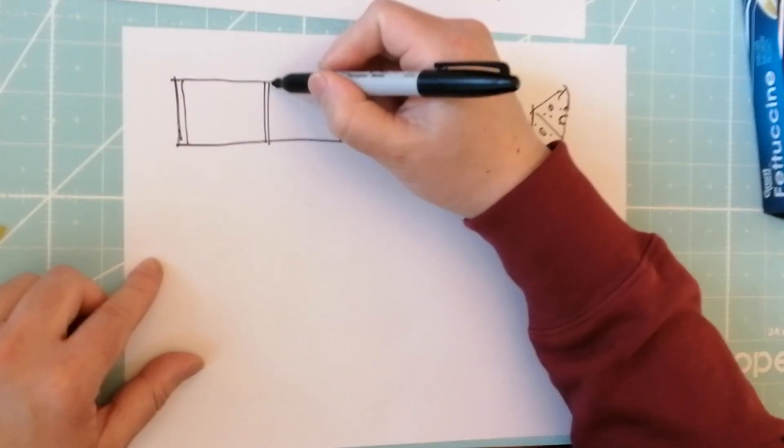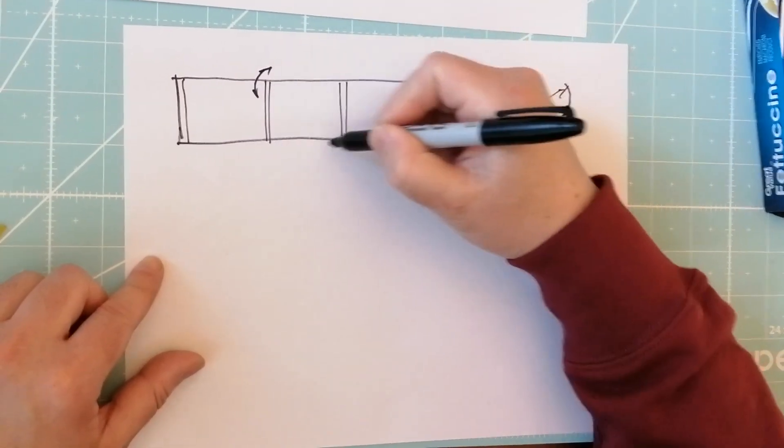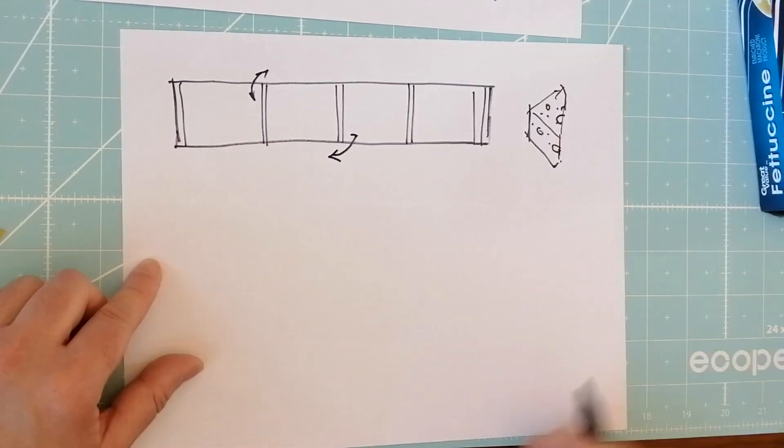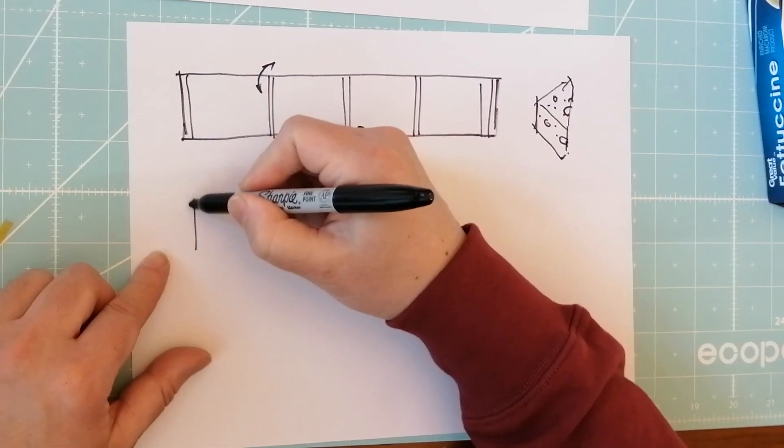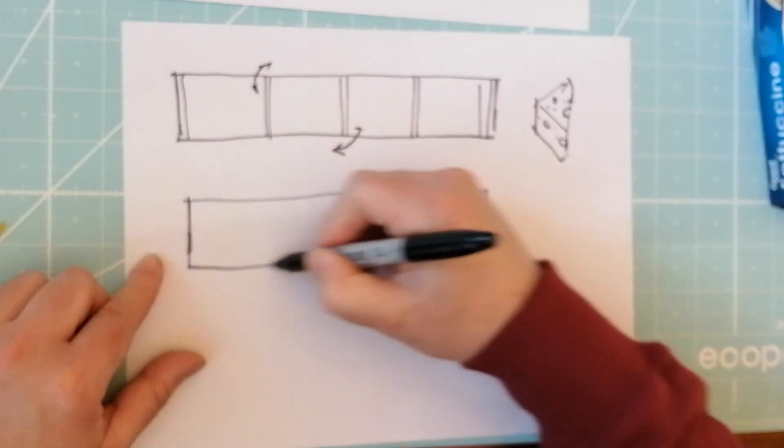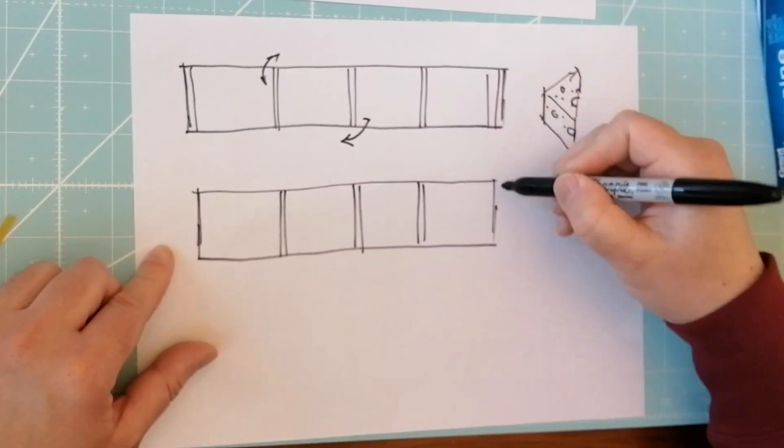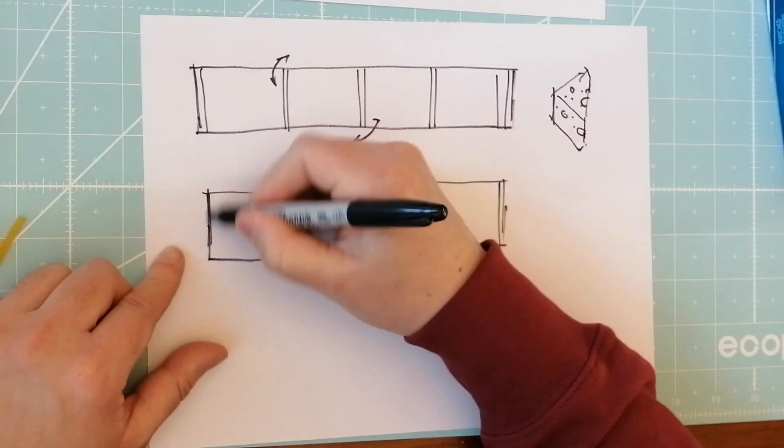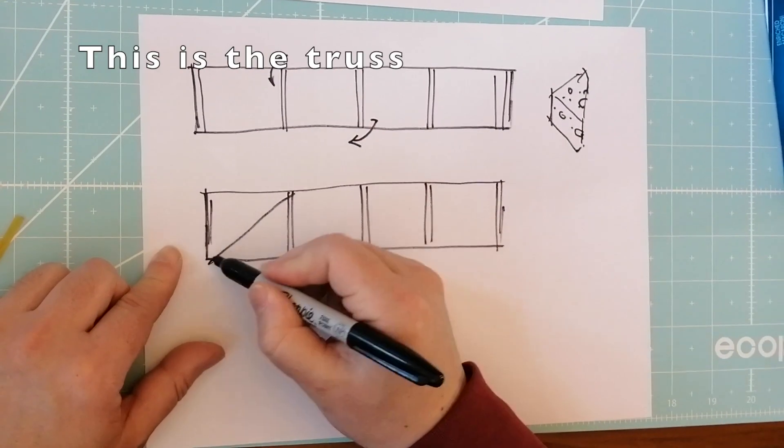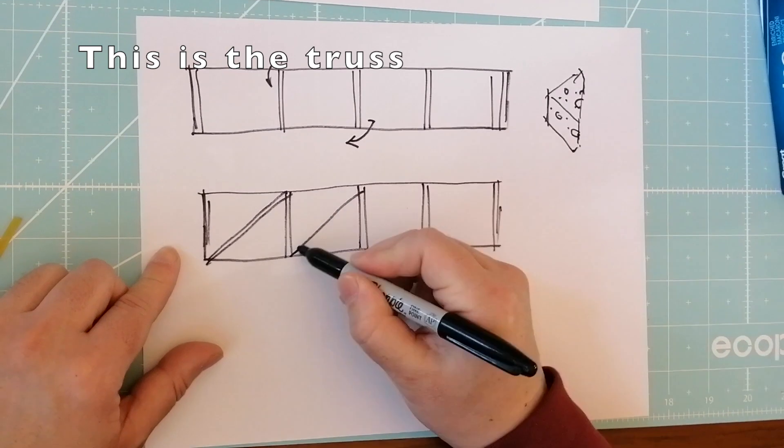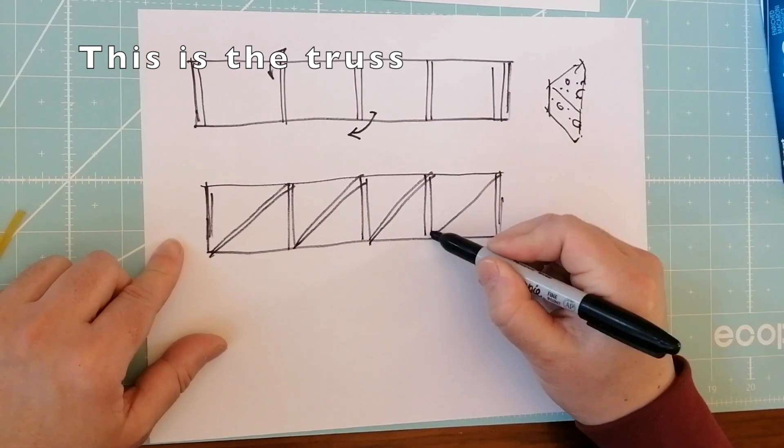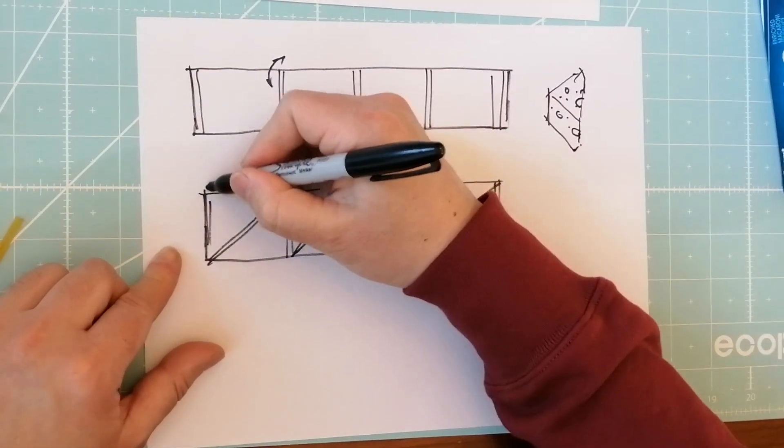So this then, this is now very stable because the loads, they go from here to here, down, and then they all get transmitted down like this. Same thing, it's very stable like this, very stable.